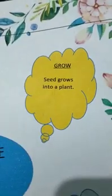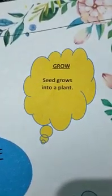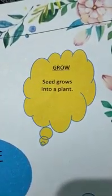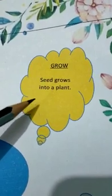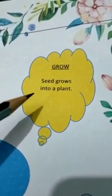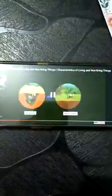The next feature is that Living Things grow. All Living Things grow — a baby grows into an adult, and a seed grows into a plant.